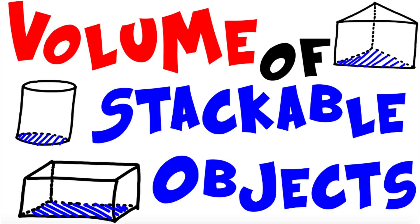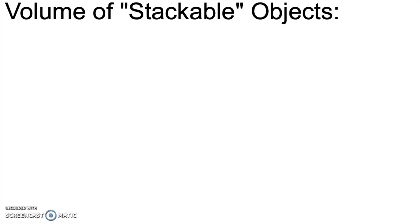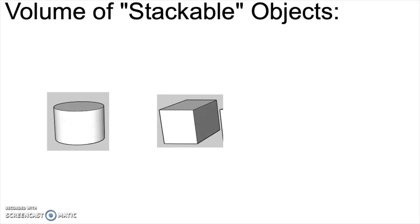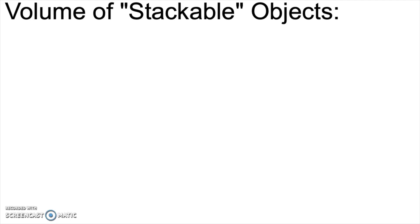Hey everyone, I'm Mr. A, and today we're going to talk about finding the volumes of three-dimensional shapes. In particular, we're going to focus on the type of shape that I call a stackable object. Stackable objects come in lots of different shapes and sizes, and math has specific names for some of them. For example, you may have heard of a cylinder, or a rectangular prism, or a triangular prism. We're just going to lump them all into one group, and you'll see why in a few moments.